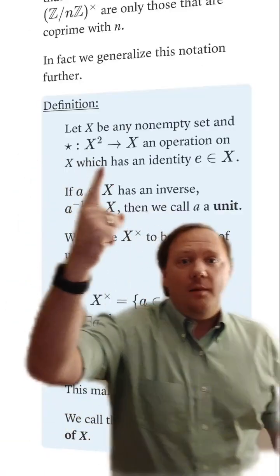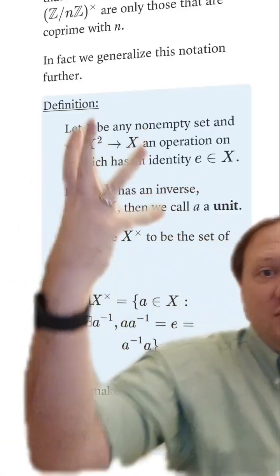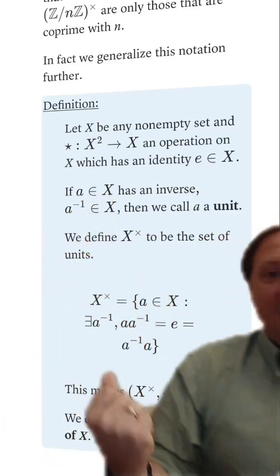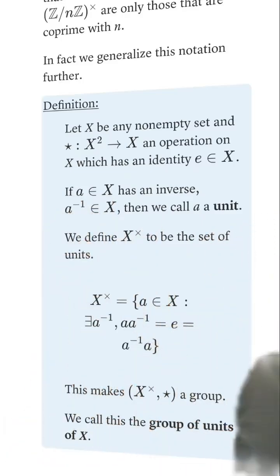And more generally, if you have any operation that has an identity, we can just keep all of those elements that have inverses and we form what is called the group of units.